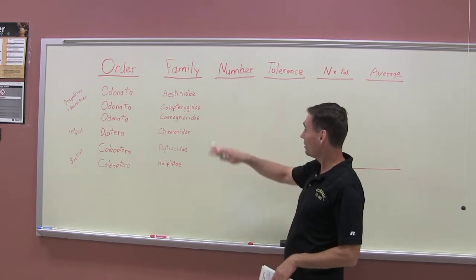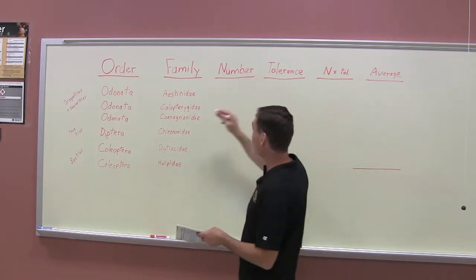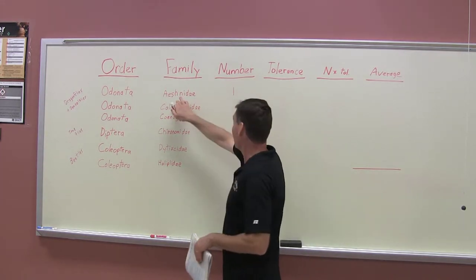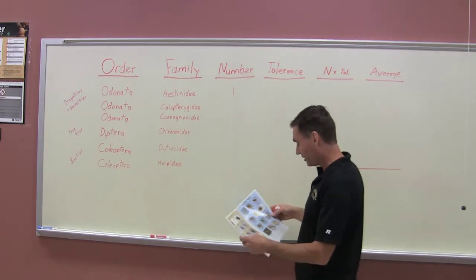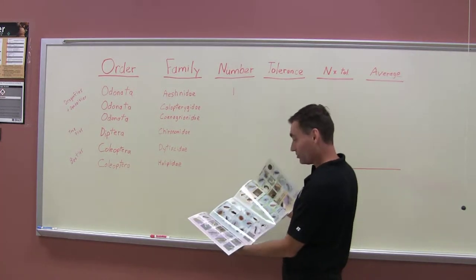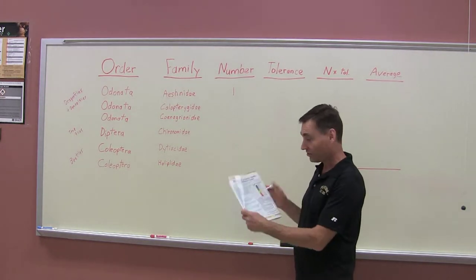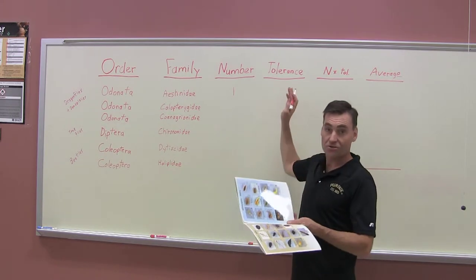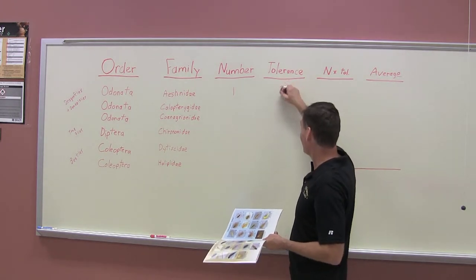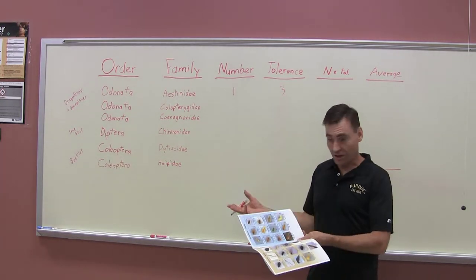We keep track of how many of each insect we caught in these groups. For example, if we caught one of these Aeshnidae, those are the darners, we look at their tolerance value. You can find tolerance values in publications - Purdue has one you can use. This tolerance is their tolerance to pollution; if they are more tolerant, they can exist in more polluted waters.